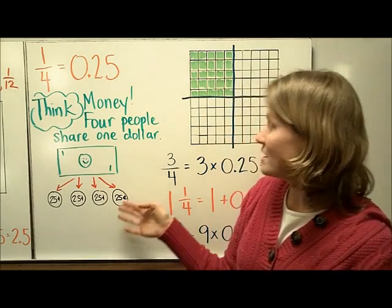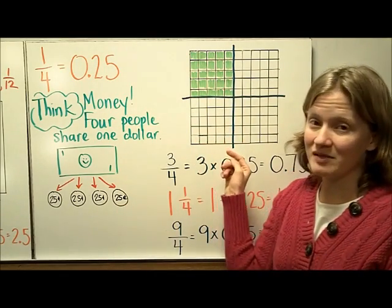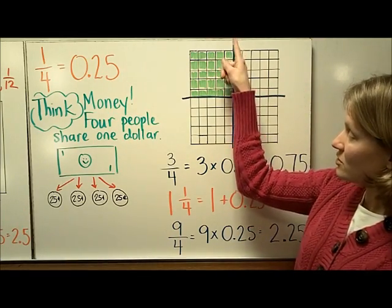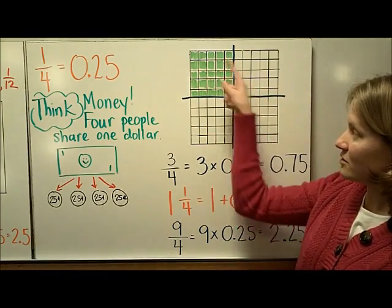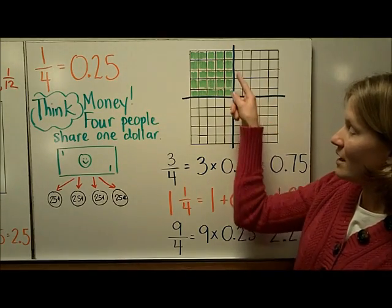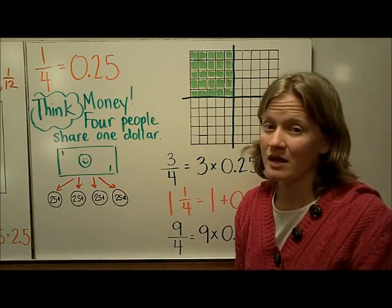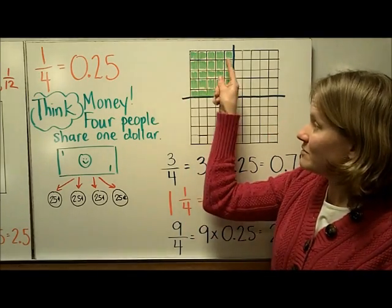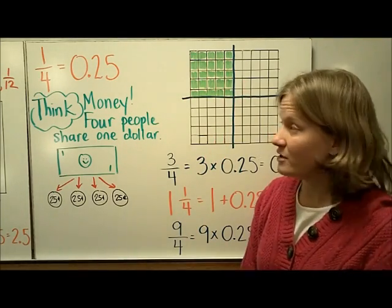Here it is in the base 10 blocks in the 100 grid. You can see that the square has been divided into 4 sections, 1, 2, 3, 4. And if one of those is colored in, then it's 25 small boxes, see 5 times 5, which is 25 hundredths.